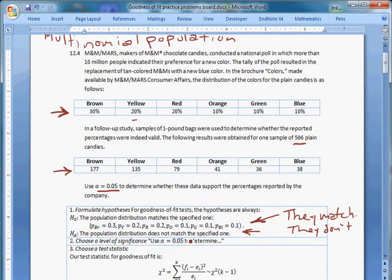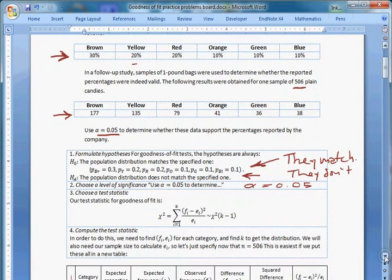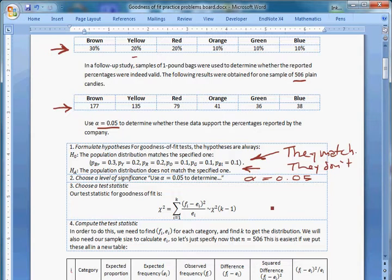Step two is the same. We're always going to choose a level of significance. The question gives us alpha equals 0.05. Then we're going to choose a test statistic. It's going to be the one from our notes for this. I'm going to write it out right next to it. It's going to be chi squared equals the sum, that's the big sigma, the sum from i equals 1 to k of f sub i minus e sub i, the quantity squared over e sub i.